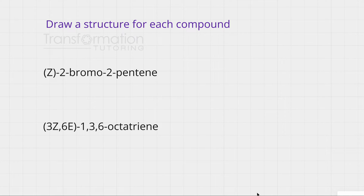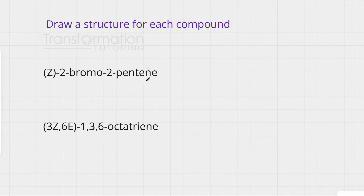In this video we will learn how to draw structures of compounds that have Z or E configuration. Our first compound is Z-2-bromo-2-pentene. I'll start with my parent chain — pent means I have five carbons, so I'm going to draw five carbons: one, two, three, four, five.